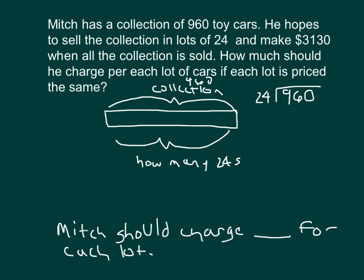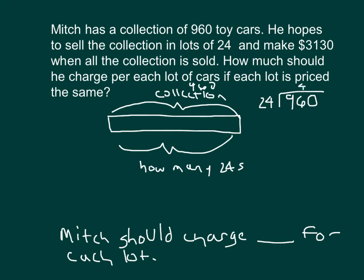For this bar model, we're taking 960 and dividing by 24 to know how many lots Mitch is selling — 24 at a time within each lot. 24 cannot go into 9, so those 900s get regrouped into the tens place with the 6. We go 24 into 96, which is 4 whole times. 4 times 24 is 96. 96 minus 96 is 0. Bring down the 0. 0 divided by 24 is 0. So 960 divided by 24 is 40 — there are 40 lots of 24, and he's trying to make $3,130.